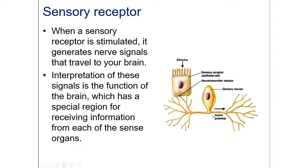The sensory neurons form the afferent pathway, taking the information to the central nervous system, and then you will have motor neurons coming out from there and connecting to the effector. This lecture's focus will be on the sensory receptor — what kinds of sensory receptors are there, and where are they located within the body.